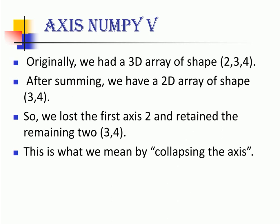So we lost the first axis that is 2 and retained the remaining 2 that is 3 x 4. So this is what we mean by collapsing the axis. When I say I am collapsing the second axis or third axis that term wouldn't appear after a function has been applied on it.